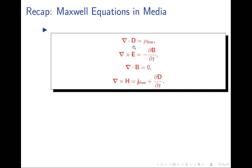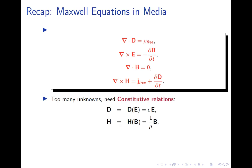These equations have too many unknowns — D, B, E, and H — giving 12 unknowns with only six equations, so the system is not closed. We need constitutive relations, similar to an equation of state in thermodynamics, to match the number of equations to the number of unknowns.